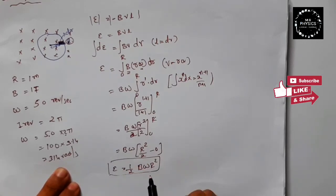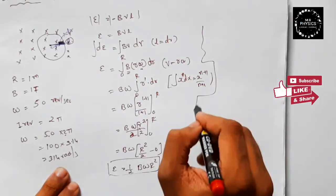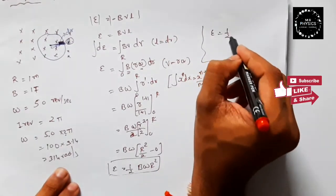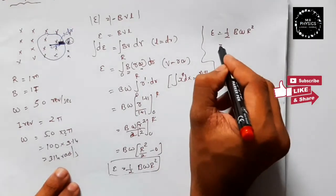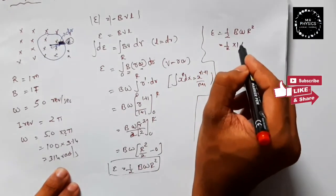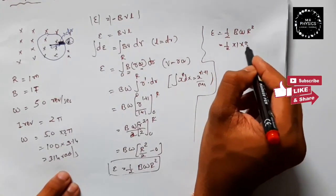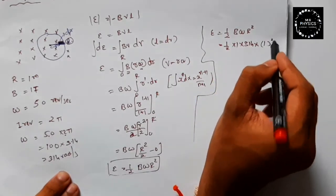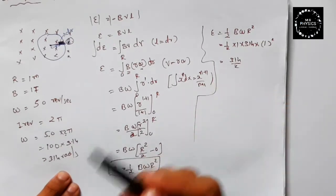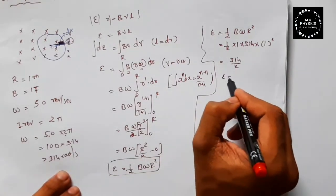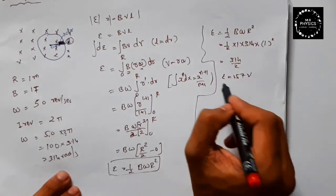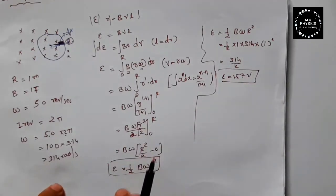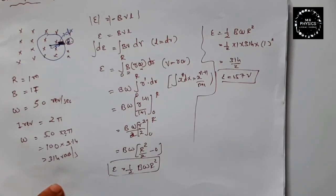Now substituting all values: epsilon = ½ · B · ω · r² = ½ × 1 (tesla) × 314 (rad/s) × 1² (meter²) = 314 ÷ 2 = 157 volts. Remember this formula and use it directly next time.